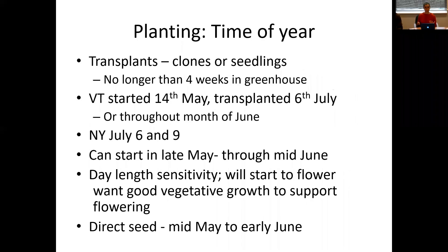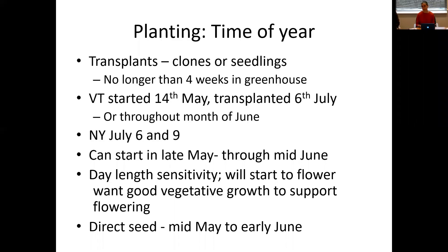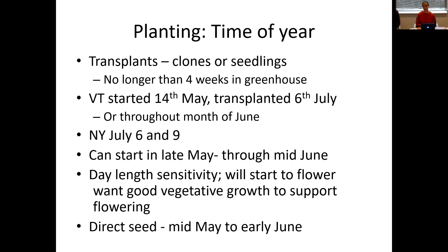First thing is planting time of year. You can transplant clones or seedlings started in a greenhouse, or you can direct seed. Traditionally this is mostly done via transplanting — ideally no longer than four weeks in the greenhouse. In Vermont, they started seedlings on May 14th and transplanted July 16th, which is longer than four weeks in the greenhouse. The important information is they're not putting those plants into the field until July, although they also did research transplanting throughout June.